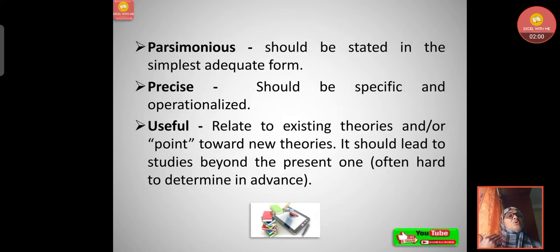Then parsimonious - that is should be stated in the simplest adequate form, it should not be complex, it should be simple. Then precise - should be specific and operationalized, not vague. Then useful - relate to existing theories and or point toward new theories. It should lead to studies beyond the present one, often hard to determine in advance.